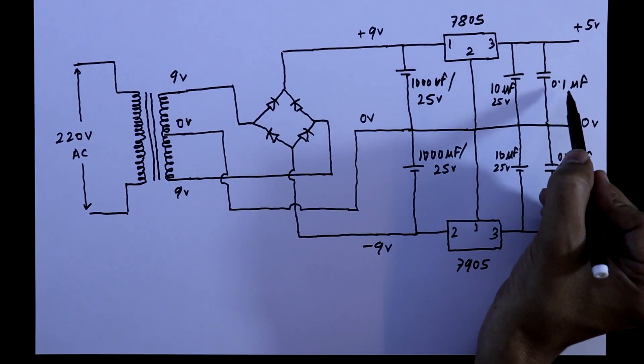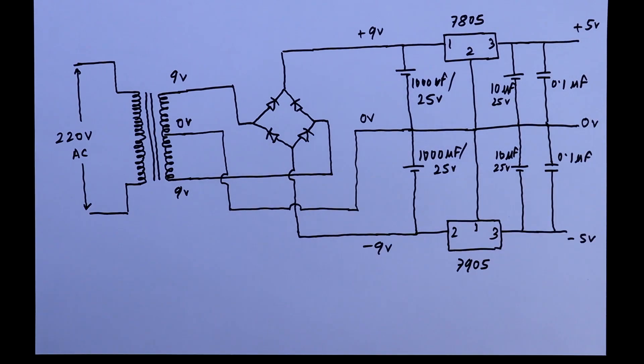And this ceramic capacitor is connected to reject the high frequency noise. So this is how we can get positive and negative 5 volt.